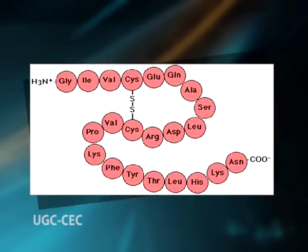Now let us see the primary structure of proteins in detail. The primary structure of a polypeptide is the specific linear sequence of amino acids that constitute the chain and the location of any disulfide bridges.